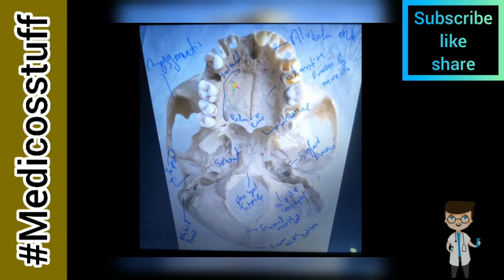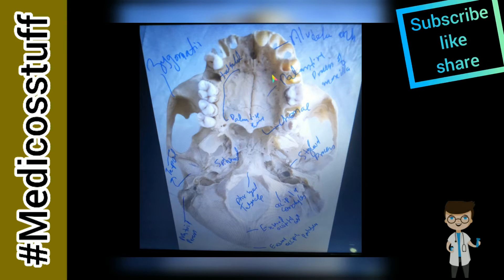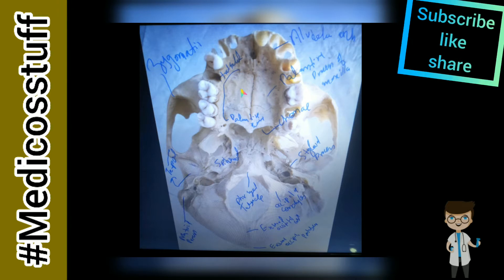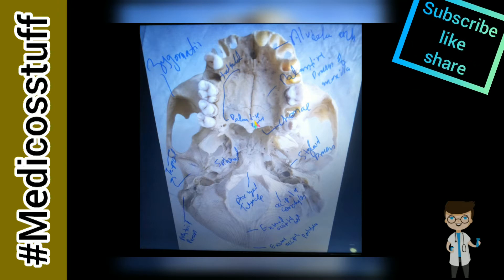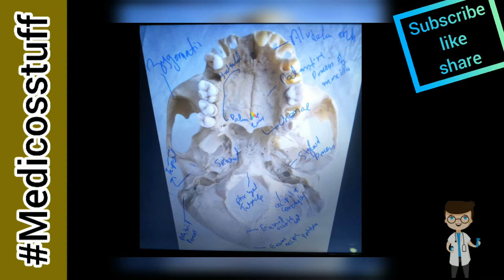The hard palate is divided into two parts. The upper part — above this line — is known as the palatine process of maxilla. And below, you can see this part, which is known as the palatine bone. So the hard palate is divided into the palatine process of maxilla and the palatine bone.